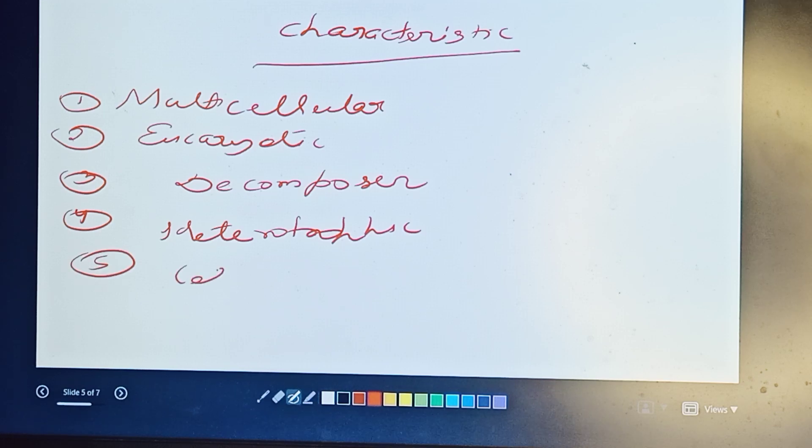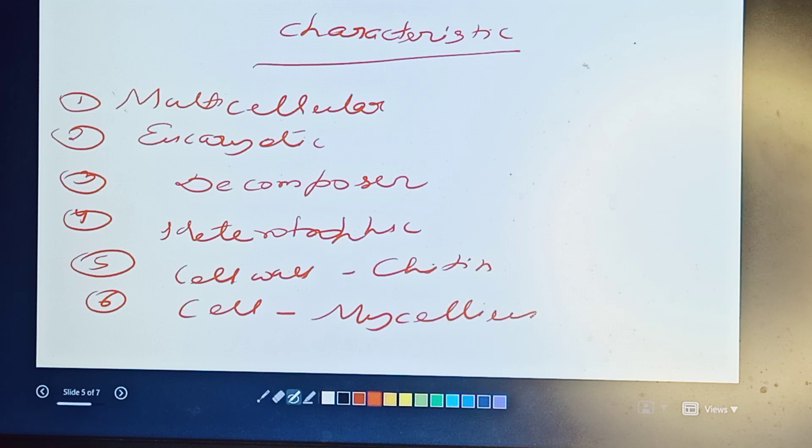Fourth is heterotrophic. Fungus cell wall, that is cell wall, is made of chitin. Cell is a network of hyphae, that is mycelium. That is cell structure of body, structure of fungus is made of mycelium.